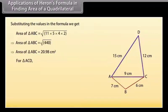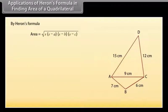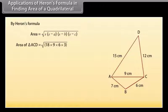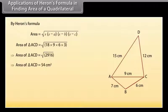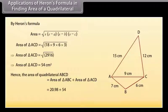Now for triangle ACD: S = (9 + 12 + 15) / 2 = 18 cm. By Heron's formula, area = √(S × (S − A) × (S − B) × (S − C)). Therefore, area of triangle ACD = √(18 × 9 × 6 × 3) = 54 cm². Hence, the area of quadrilateral ABCD = area of triangle ABC + area of triangle ACD = 20.98 + 54. Therefore, area of quadrilateral = 74.98 cm².